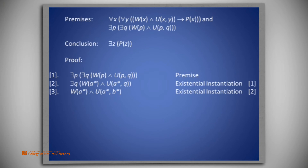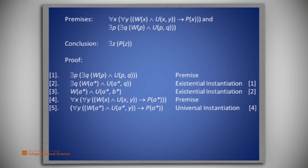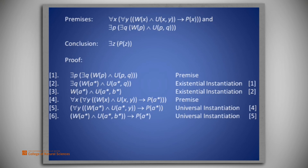Now let's introduce the first premise. On line four we have: for all x, for all y, W(x) and U(x,y) imply P(x). On line five we universally instantiate line four with x being replaced by a*, resulting in: for all y, W(a*) and U(a*,y) imply P(a*). On line six we universally instantiate line five with y being replaced by b*, resulting in: W(a*) and U(a*,b*) imply P(a*).